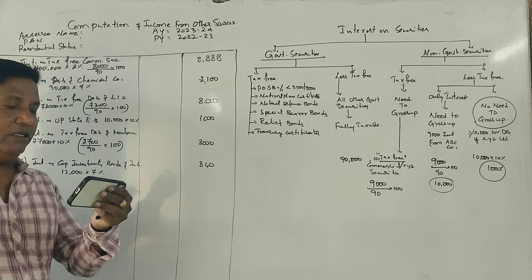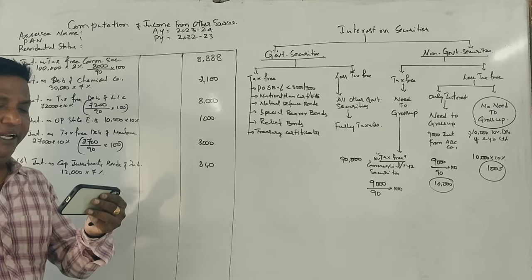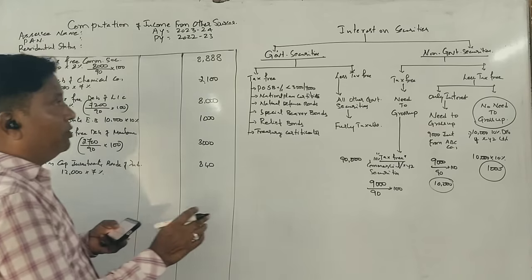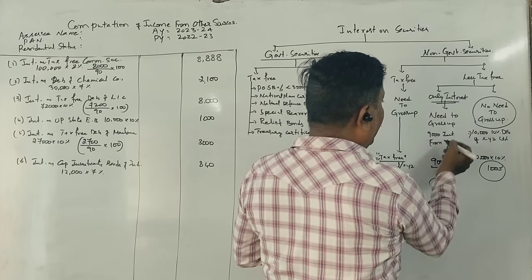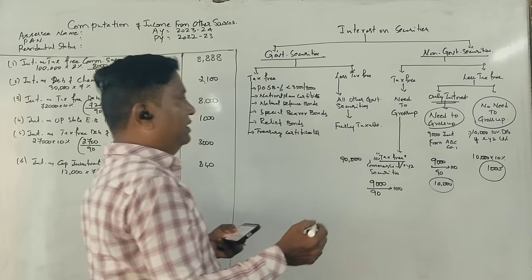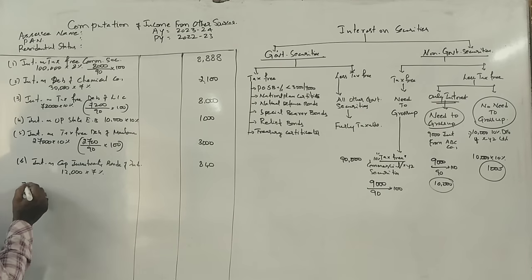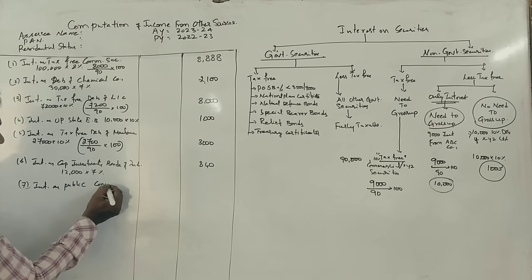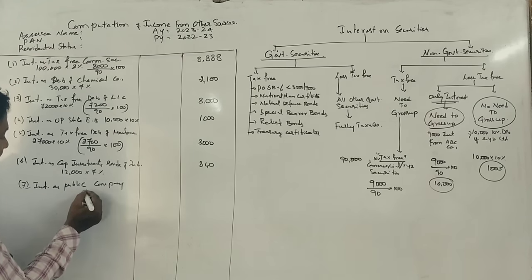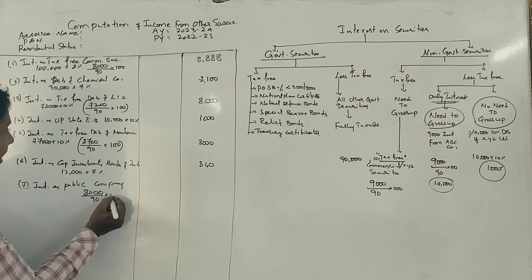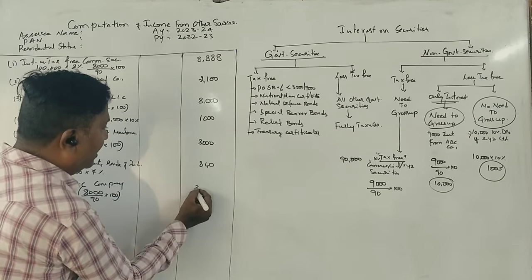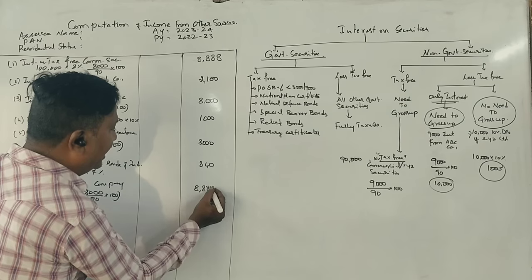Rs. 8,000 gross received as interest from Public Limited. This is net interest amount received. We need to gross up. Interest on public company: 8,000 divided by 90 into 100 equals Rs. 8,888.